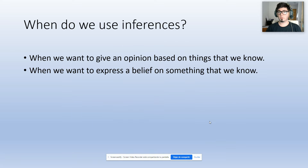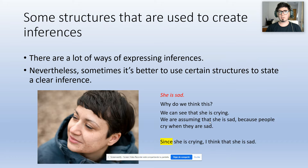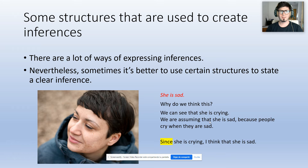When do we use inferences? We use them when we want to give an opinion based on things that we know, or when we want to express a belief on something that we know. I will give some examples and show the structures we're going to use to create inferences. There are a lot of ways of expressing them; nevertheless, sometimes it's better to use certain structures to state a clear inference.